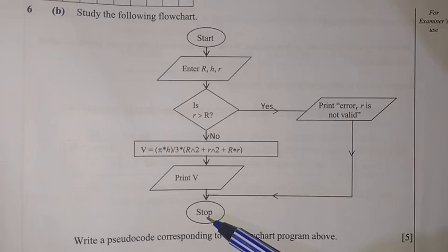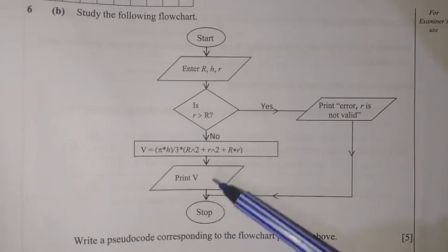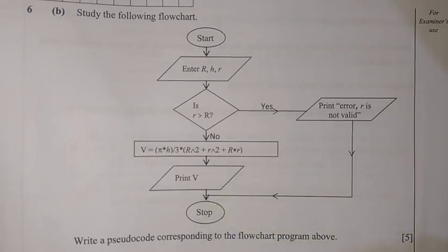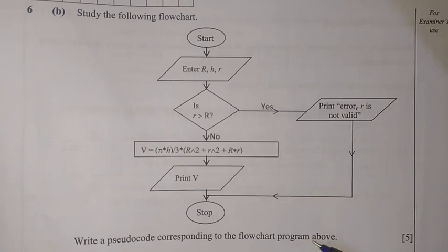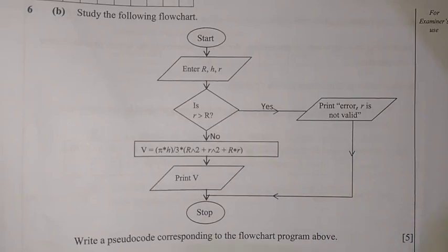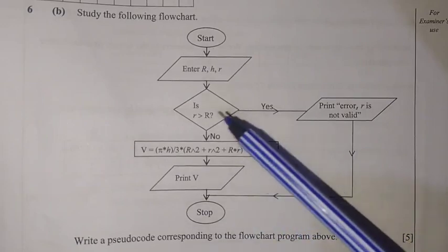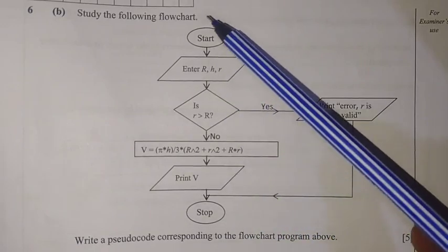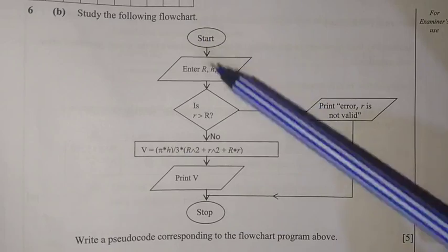Down here we display the volume, then the end of the program. So this is the flowchart. The question asks: write a pseudocode corresponding to the flowchart program above. So we should now come up with the pseudocode.